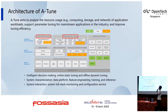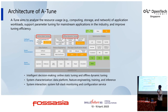The architecture of ATUN analyzes resource usage such as computing, storage, and network of application workloads, supports parameter tuning for mainstream applications, and improves tuning efficiency. The architecture includes three parts: intelligent decision-making, which includes online static tuning and offline dynamic tuning; system characterization, which includes data platform, feature engineering, training, and inference; and system interaction, which includes full-stack monitoring and configuration service.